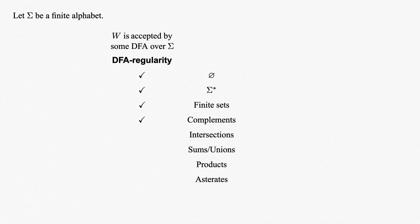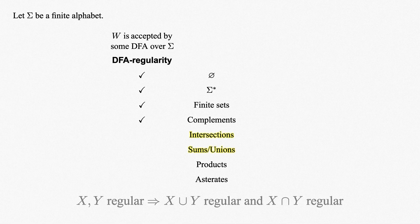Let sigma be some finite alphabet. Next up on our to-do list for regular sets — in this video we're dealing exclusively with DFA regularity — is to show that they're closed under finite unions and intersections. Specifically, we'll prove that if x and y are regular sets, then the sets x union y and x intersect y are also regular.